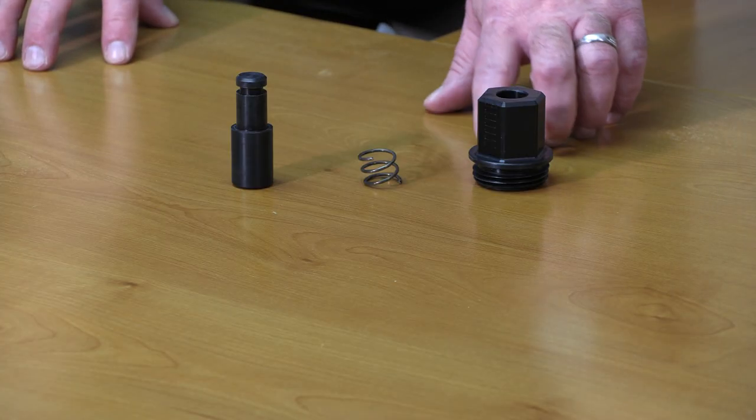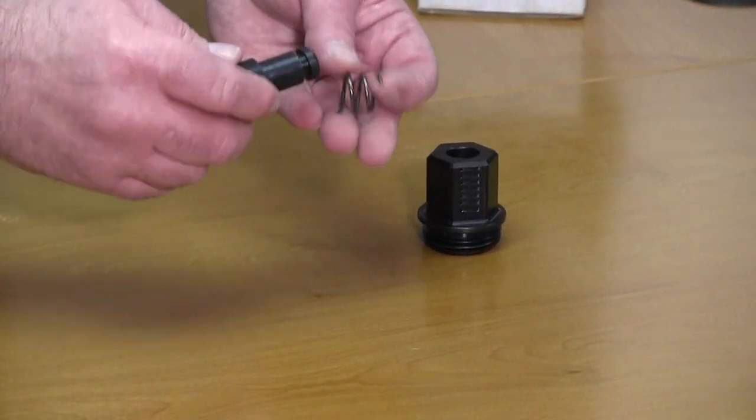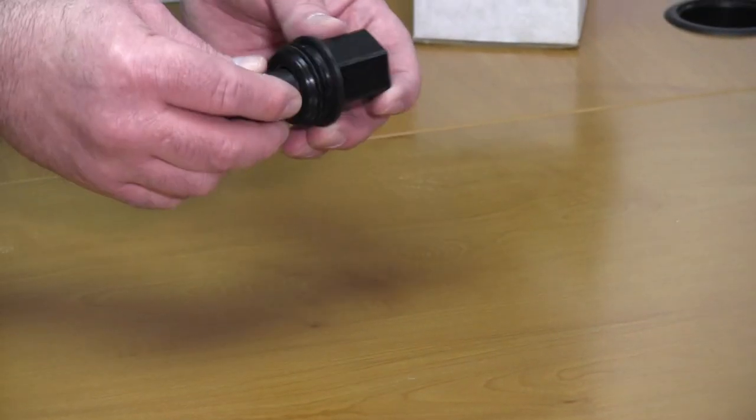The activator assembly consists of the cap, the spring, and the plunger with the sear slot. Easily assembled: spring over the plunger, plunger into the cap.